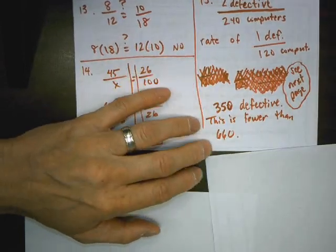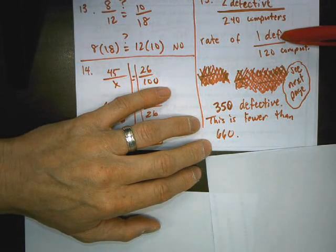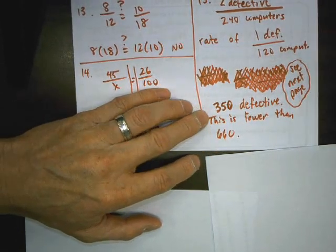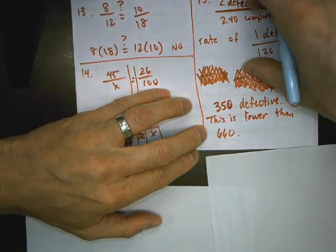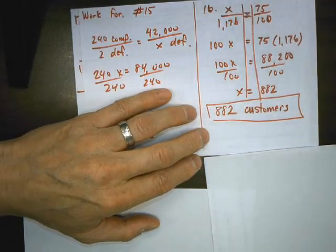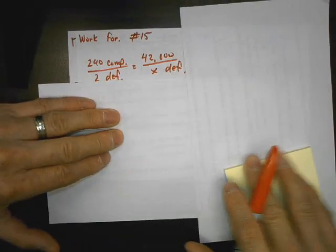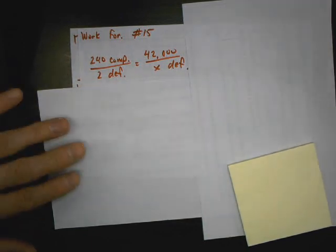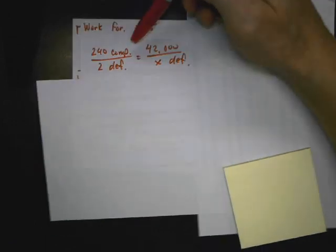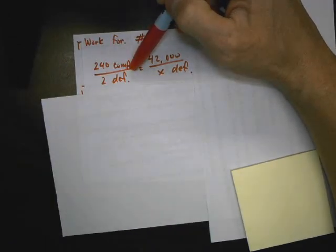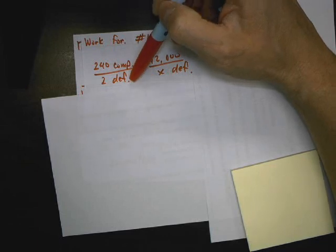If that's true, then that means out of 42,000, there's going to be 350 defective, which is definitely fewer than 660. Now, I might have lost you there, so let me explain that another way. Okay, let's show you another way you can do that. You can write a proportion. Don't even need to reduce like I did earlier. Instead, what I did earlier is I got the rate and I multiplied it by 4200, but I know not all of you understand that. So let's explain it another way.